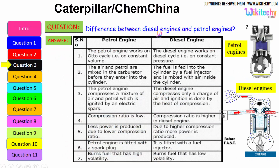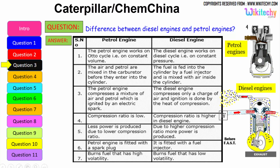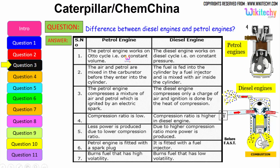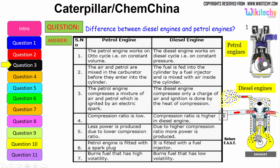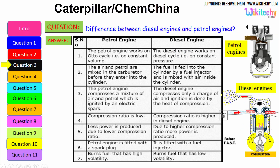Let's see the difference between diesel engine and petrol engine. The petrol engine works on the Otto cycle, therefore on constant volume. Whereas the diesel engine works on the diesel cycle, on constant pressure.